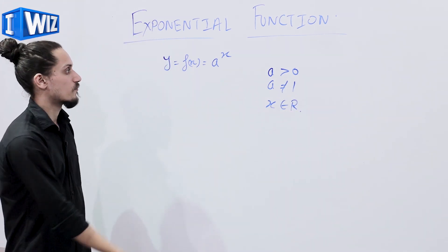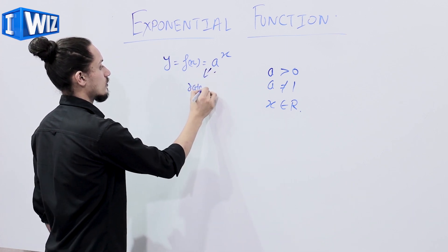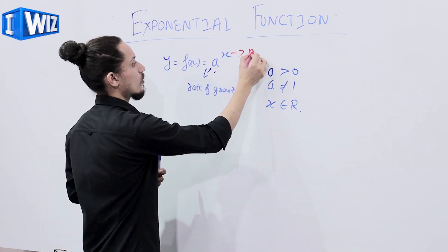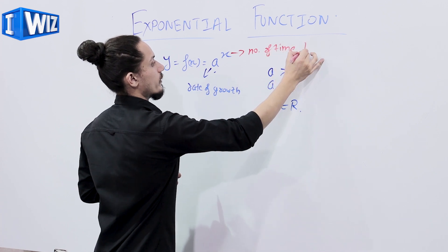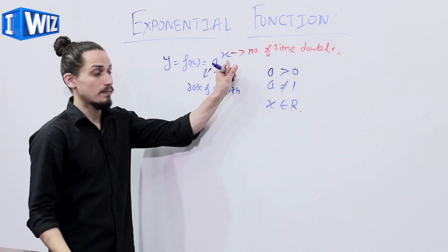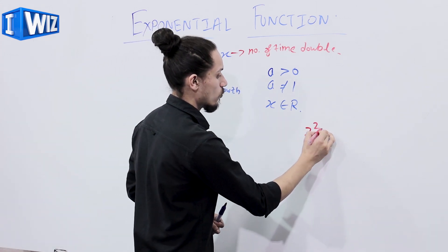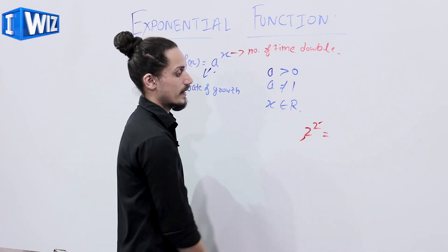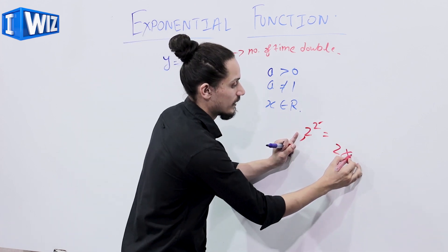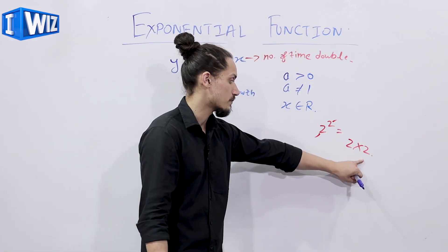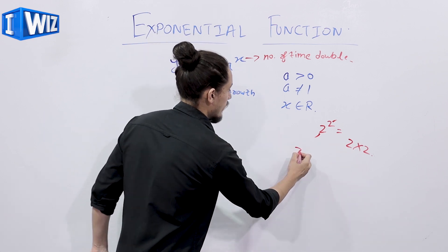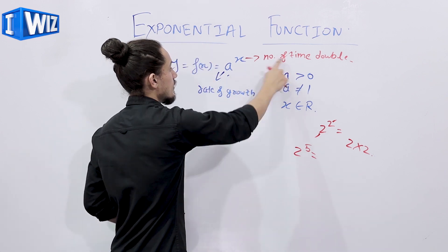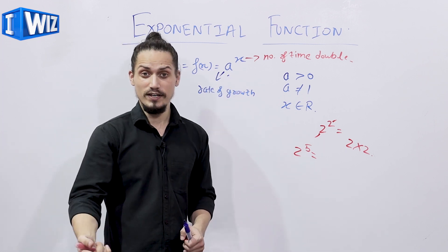Such a function is called an exponential function, where 'a' implies the rate of growth and 'x' implies the number of times we double this rate of growth. For example, 2 raised to power 2 means 2 is the rate of growth and the power 2 means it is being doubled one time. Similarly, 2 raised to power 5 implies it is being doubled five times. So 'x' implies the number of times this rate of growth is being doubled.